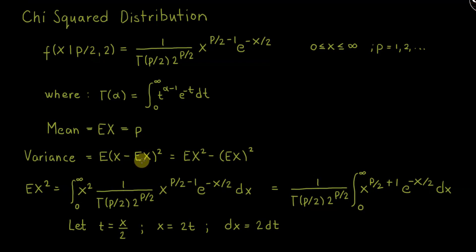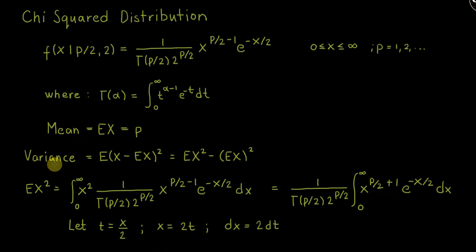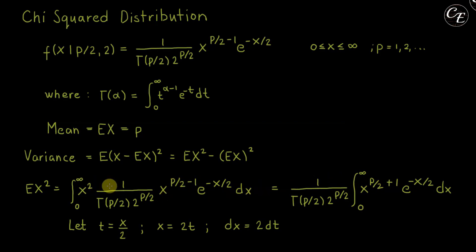Now let us derive the variance. Variance equals E[X²] minus (E[X])², where E[X] = p (the mean we just derived). We still need to derive E[X²]. The expectation of x² equals the integral from 0 to infinity of x² times the PDF dx. Moving out the constant and combining x terms: x^(p/2 − 1) times x² gives x^(p/2 + 1), so we integrate x^(p/2 + 1) · e^(−x/2) dx.